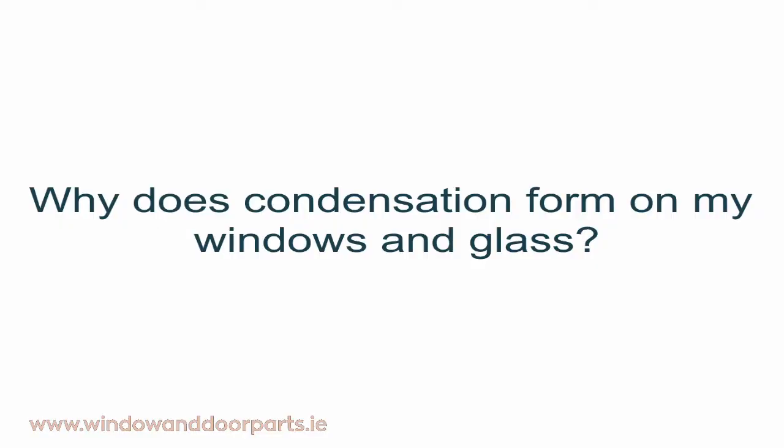Why does condensation form on my windows and glass? Condensation forms when humid air comes into contact with a cold surface. The coldest surface in your home is more than likely going to be the glazing of your windows and doors. Glass is a poor thermal insulator compared to the other building elements of your home like your walls. Whether you have single, double or triple glazing, the glazing will always lose more heat compared to the other building elements. The insulation of your glazing will have a great effect on the formation of condensation. The lower the heat loss, the less condensation will form.